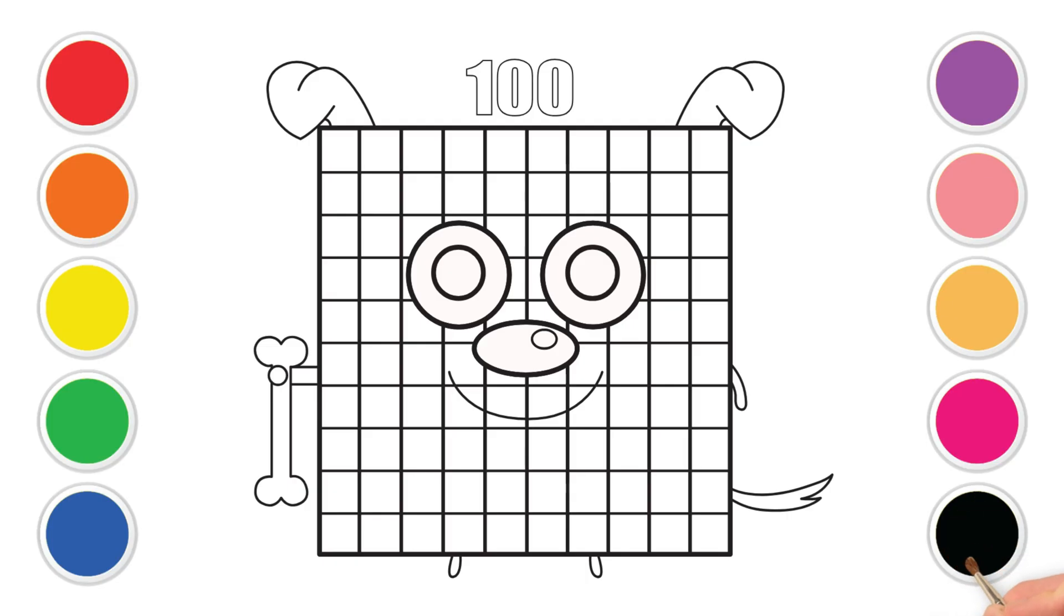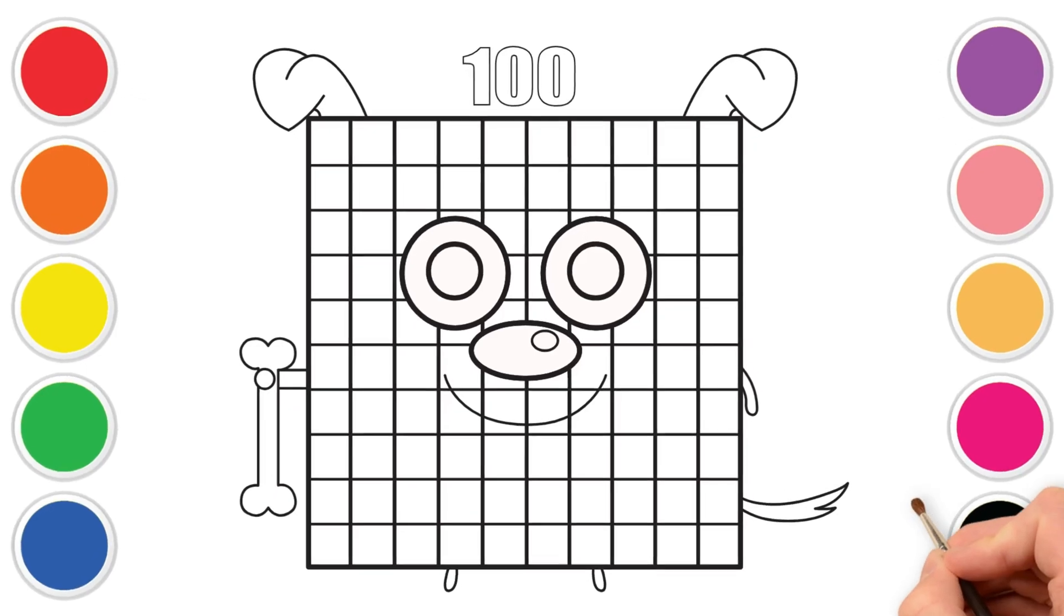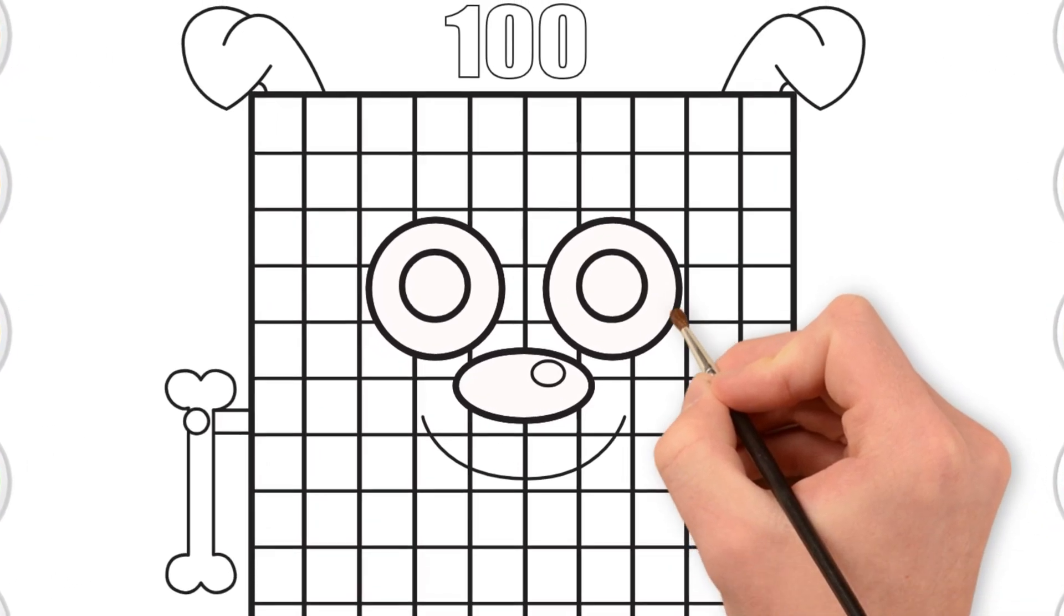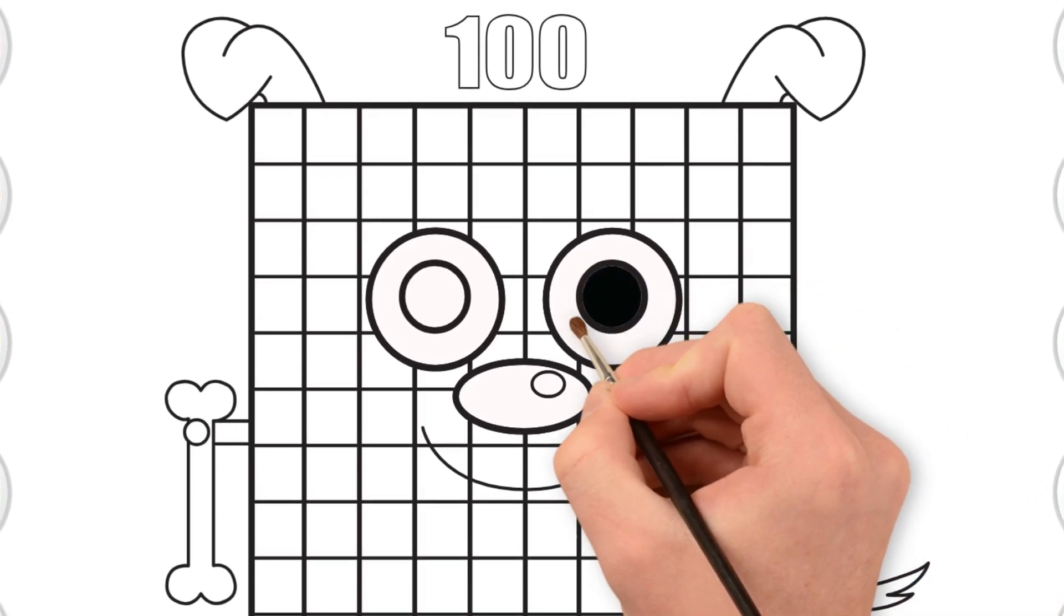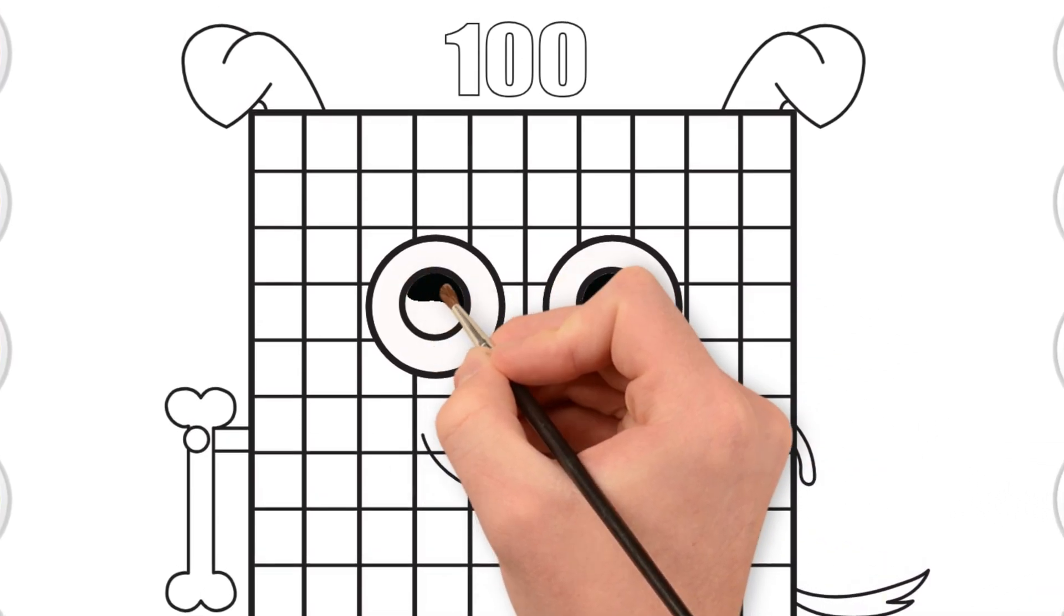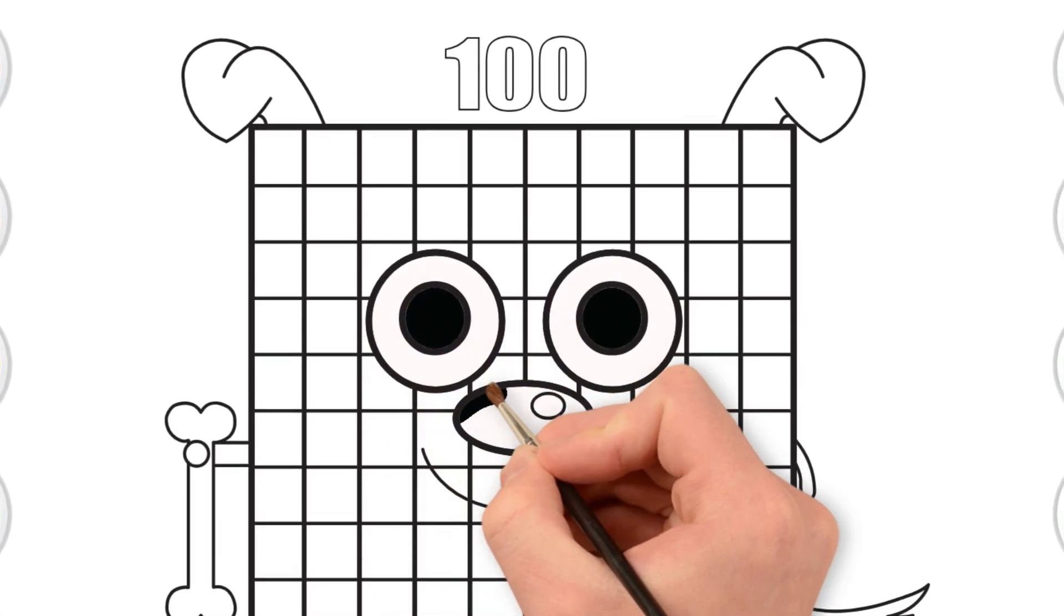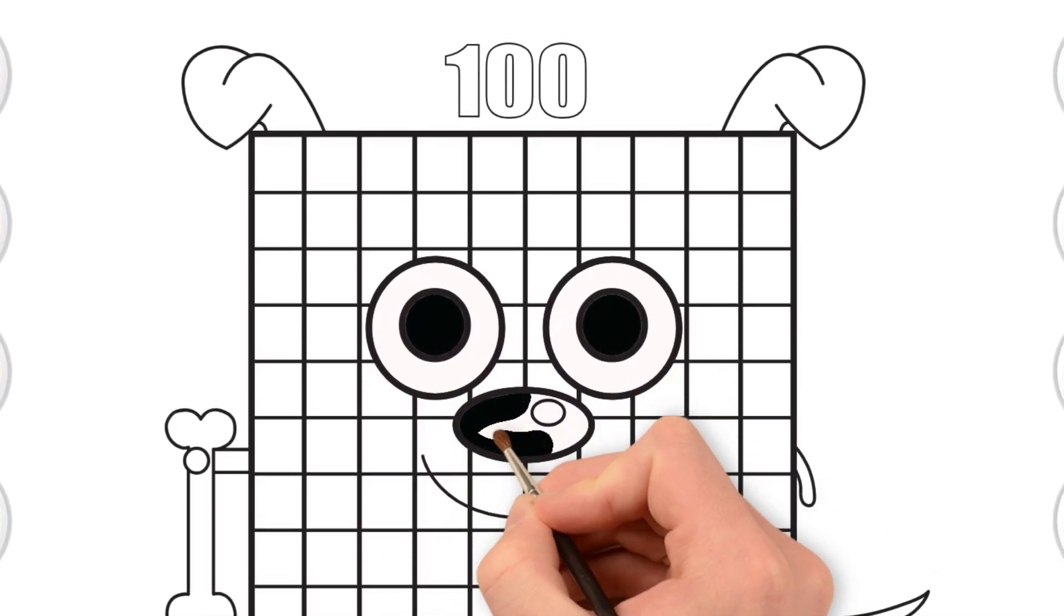First, carefully color the pupils of the eyes black. Pupils help us see. You can also use your black pencil or marker to carefully trace over the grid lines. Now, move to the nose. Nice and round. Fill it in with black.